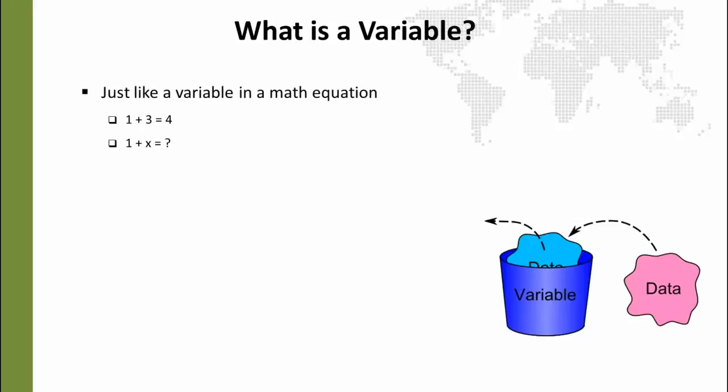Basically, a variable is just like a variable in a math equation. It's the same thing. If you are familiar with algebra, you already know essentially what a variable is. You can see here I've got an example: 1 plus 3 equals 4 - there's no variable in there. But if we said 1 plus X, it's going to equal something unknown; it depends on what X is. Same thing in a programming language.